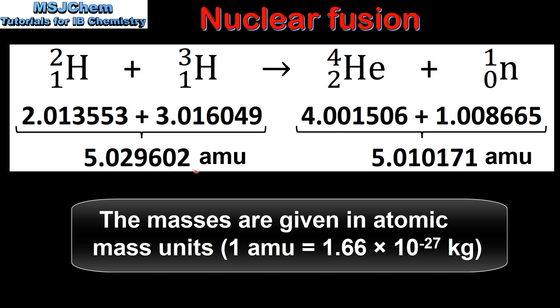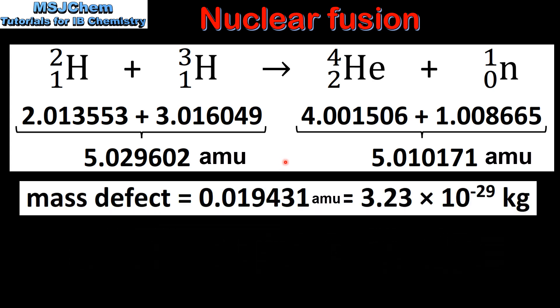By calculating the total mass of the reactants and the total mass of the products we can calculate the mass defect. So when we subtract the mass of the products from the mass of the reactants we get our mass defect.